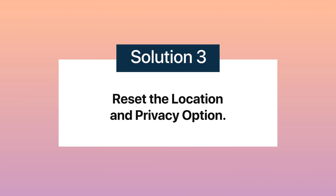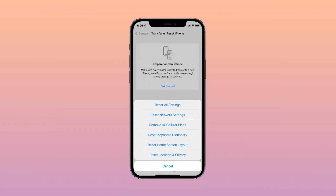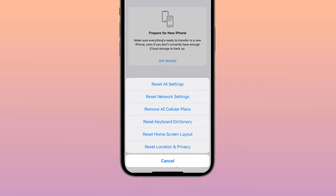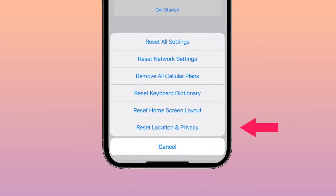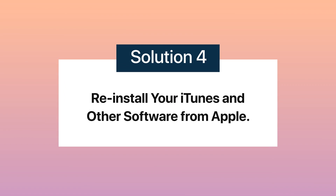Solution three: reset the location and privacy option. Another way is by resetting your location and privacy options under Settings, then connect your iPhone device to your computer and check for your DCIM folder.